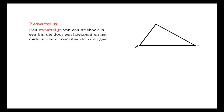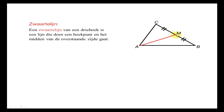Ik zal daar even een voorbeeld van laten zien. We maken nu een zwaartelijn vanuit A op BC. Dat wil zeggen dat we BC precies door midden moeten delen. We zetten precies in het midden een streepje en trekken een lijn van A naar het midden van BC. Die tekens staan erbij om te laten zien dat lijnstuk Cm even lang is als lijnstuk Mb.